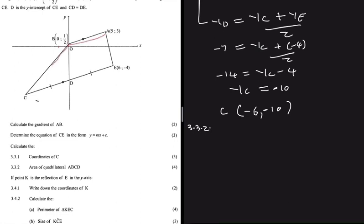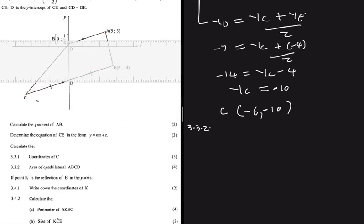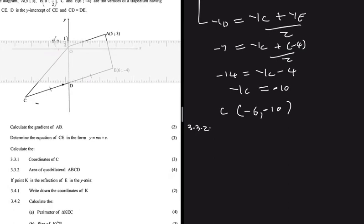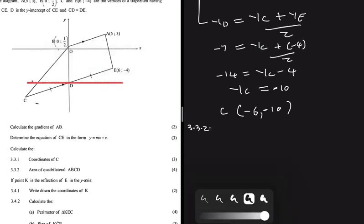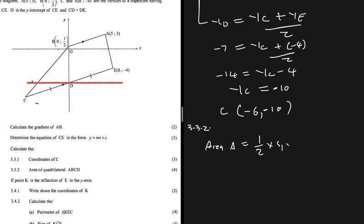To find the area of quadrilateral ABCD, the approach is to split it into two triangles — triangle ABD and triangle BDC — and calculate each area using the formula: Area = ½ × side₁ × side₂ × sin(included angle). A straight line is constructed to assist with identifying the included angles.